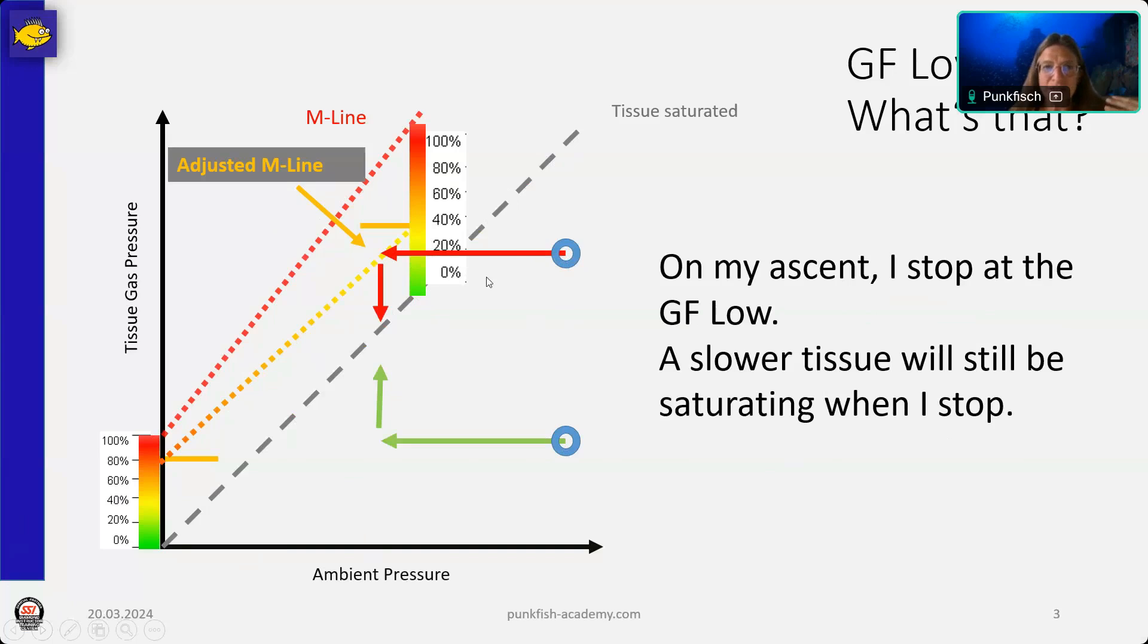When we start our ascent, the fastest tissues are the ones that are most saturated. And now we ascend and these fastest tissues start to desaturate. But we have medium tissues and even slow tissues that take a much, much longer time to saturate. And then later as well, they take a lot more time to desaturate. So, while we do our first stop because our first leading tissues on the initial ascent hits the M line, the adjusted M line that we did set, there are more and more slower and intermediate tissues.